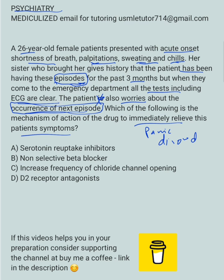This is different from specific phobias — panic disorder occurs without any reason. For specific phobias, the reason is specific; for example, a patient afraid of heights would be a specific phobia. So this is definitely panic disorder. For panic disorder, you need to know why paresthesias happen — remember, there are also paresthesias, and they may ask about this.